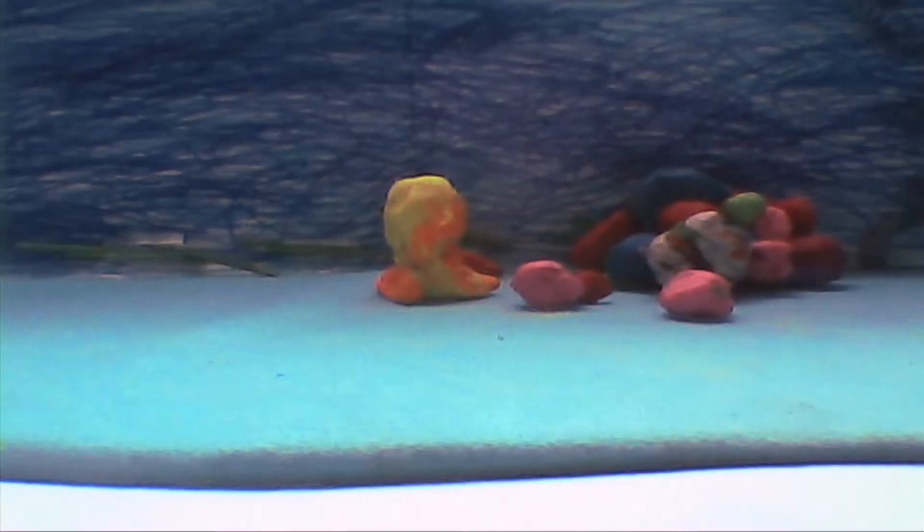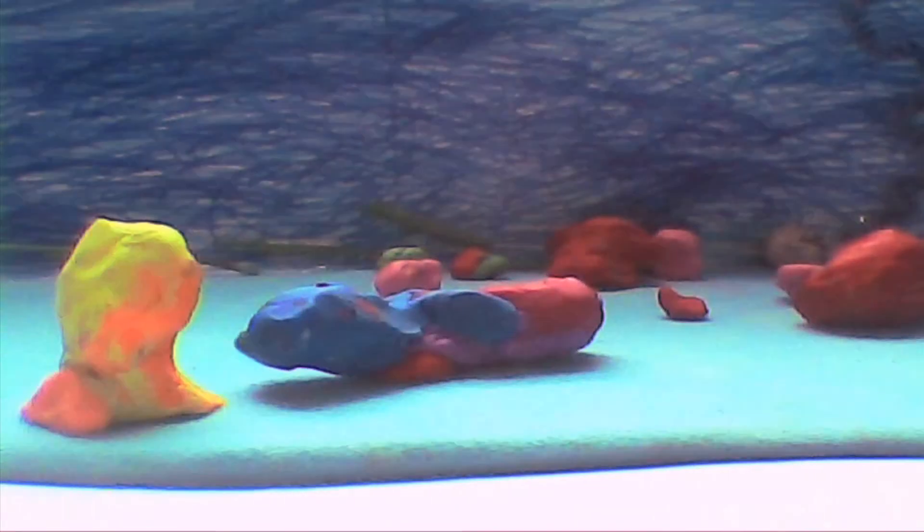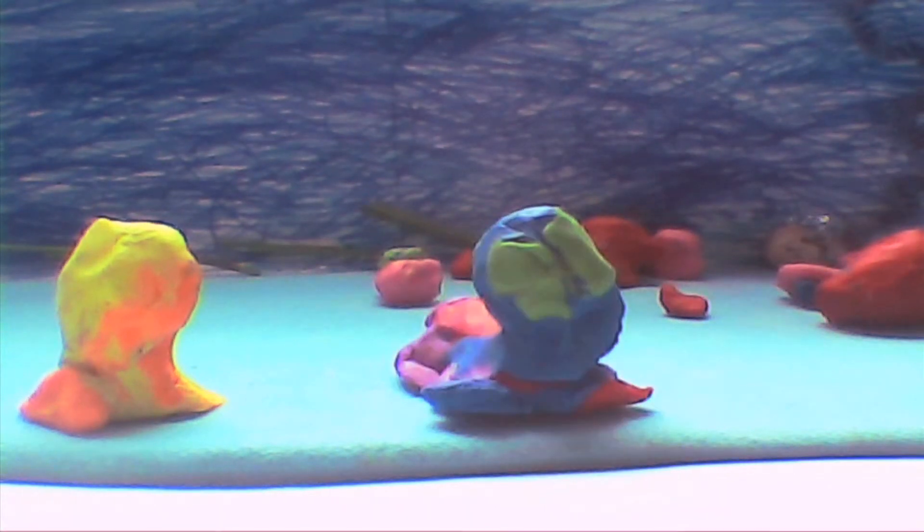The rocks start to fall, then the jelly mouse pushes the girl out of the way and the rocks collapse on him. The girl moves all the rocks and finds that the jelly mouse is okay. She gives him a big hug.